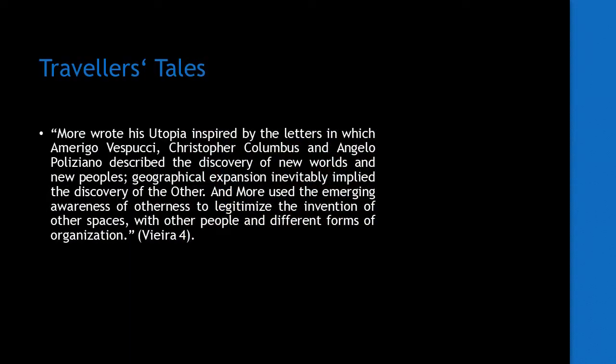While the notions of Utopia as a non-place and of Utopia and Dystopia existing within one another are certainly helpful, especially within the context of Australian dystopian fiction, I want to focus on mobility rather than spaces for this video. Referring once more to Vieira's entry in the Cambridge Companion to Utopian Literature, we can see that Utopian Literature is, at its very conception, intrinsically linked to notions of travel — specifically to the so-called Age of Exploration, or rather, as we'd see it today, the beginning of European colonization spreading across the globe. More wrote his Utopia inspired by letters in which Amerigo Vespucci, Christopher Columbus and Angelo Poliziano described the discovery of new worlds and new peoples. Geographical expansion inevitably implied the discovery of the other, and More used the emerging awareness of otherness to legitimize the invention of other spaces with other people and different forms of organization.